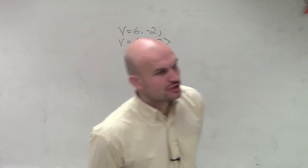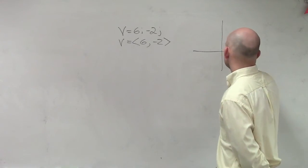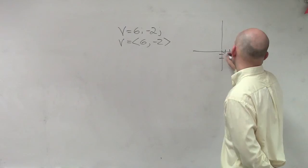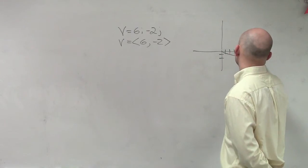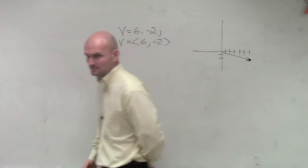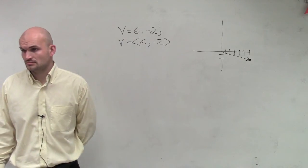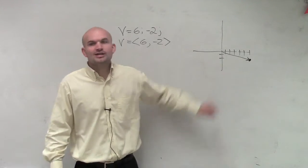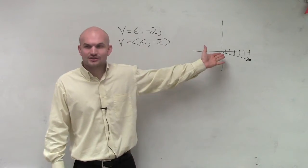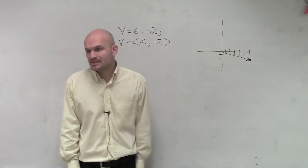So what we want to do is — if we were to draw this vector — does that vector have a magnitude of 1? No. But what we want to do is draw this vector where it has a magnitude of 1, but it's still going to keep the same direction.